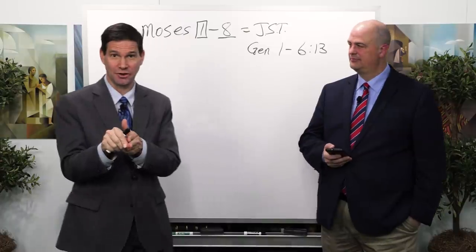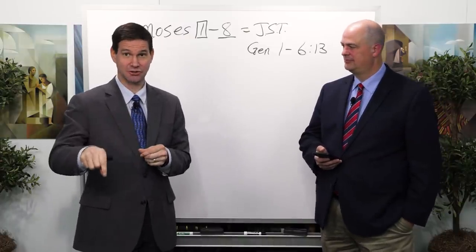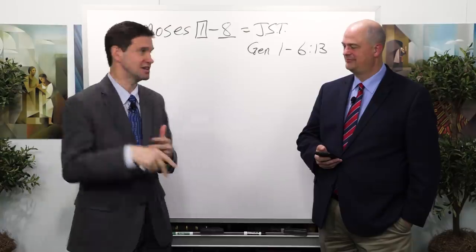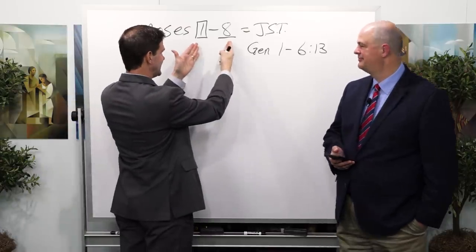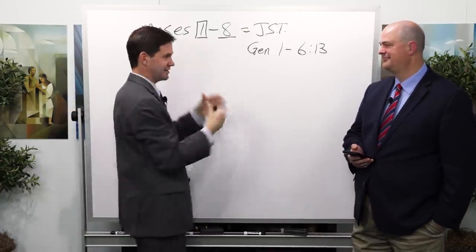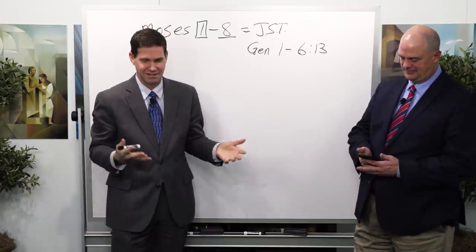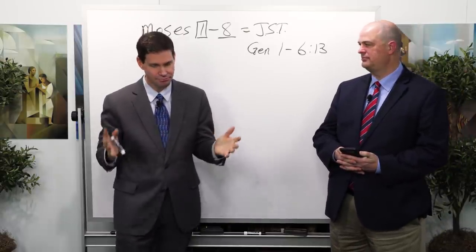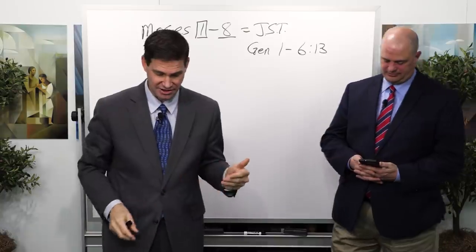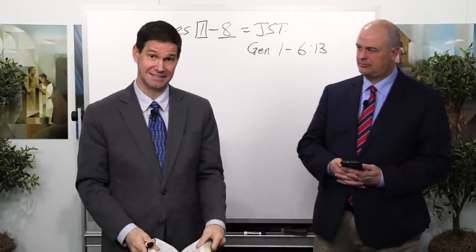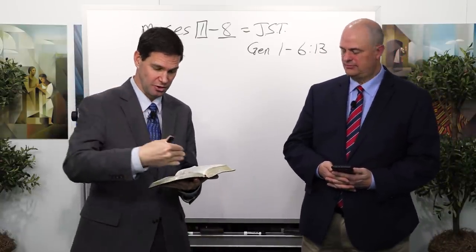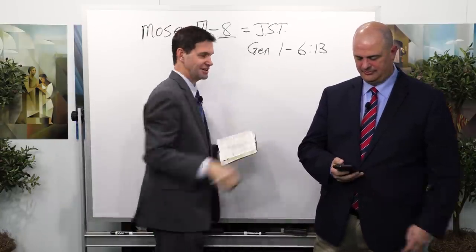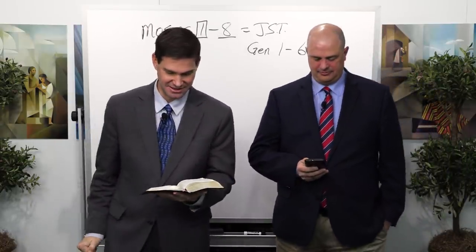That's where you're going to get the first insertions in the appendix of those JST editions, because previous to that we didn't need to use them there — we have the book of Moses in the Pearl of Great Price, which represents the entirety of the Joseph Smith translation up to that point. With that foundation, let's jump into chapter 8 of Moses and work all the way through Moses 8, then jump over into the Genesis account in chapter 6.